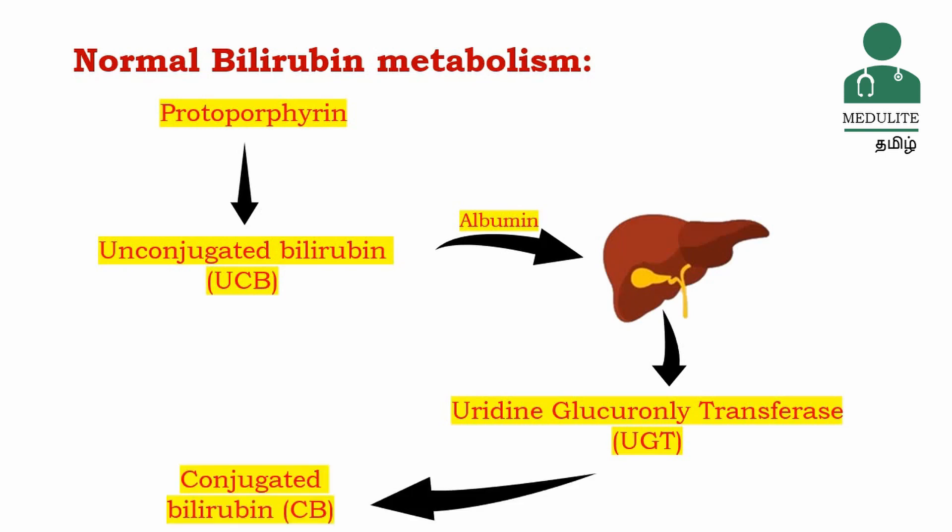If you have conjugated bilirubin, it will be water soluble. The unconjugated bilirubin is fat soluble, but through detoxification in our liver with the help of uridine glucuronosyl transferase enzyme, it will be converted to conjugated bilirubin, which is water soluble.